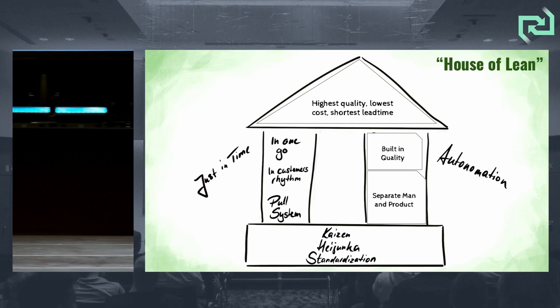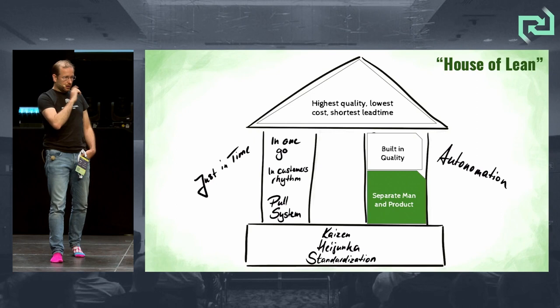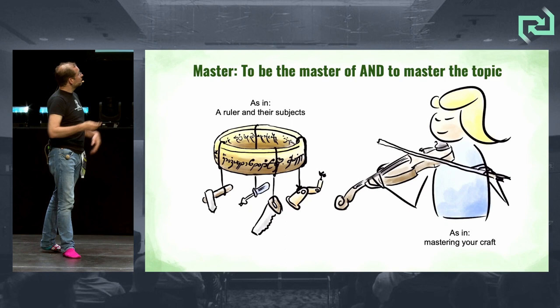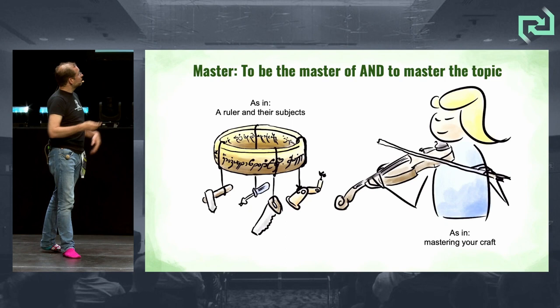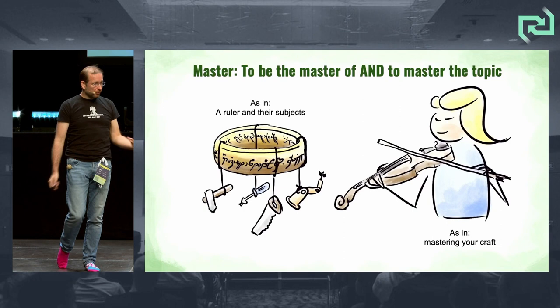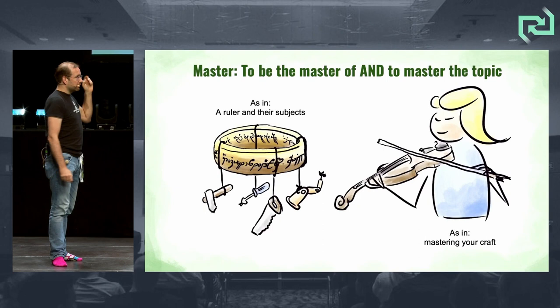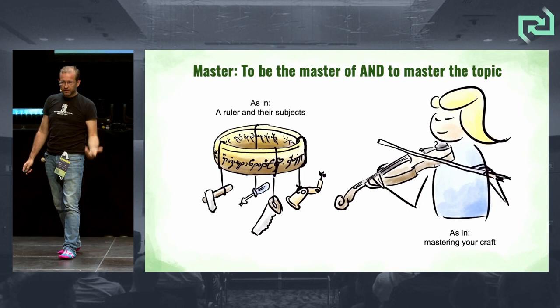The jidoka autonomation part leads directly into one of the two things in that pillar: 'separate the work of humans from the work of machines.' This is about mastery. You have two different kinds: on one side, being master over your tools — you rule over your tools. On the other side, mastering your craft — being really good at what you do, being really good at using those tools. It's about mastery and to master your tools.